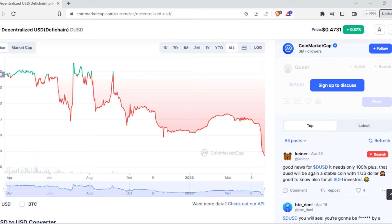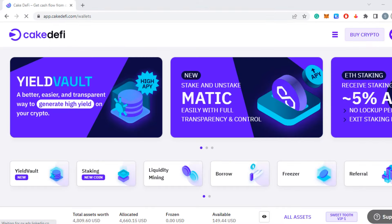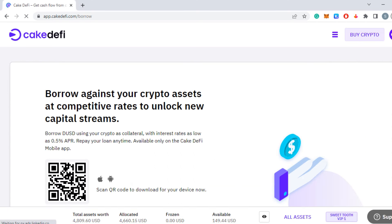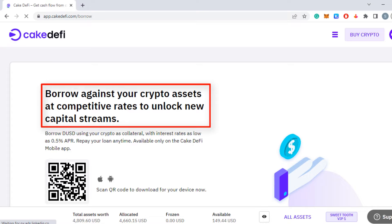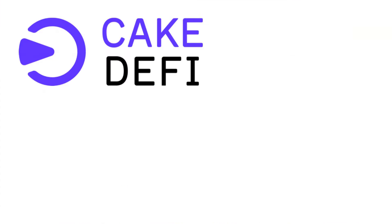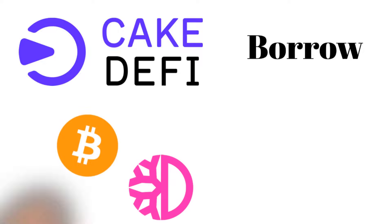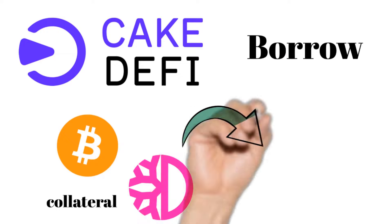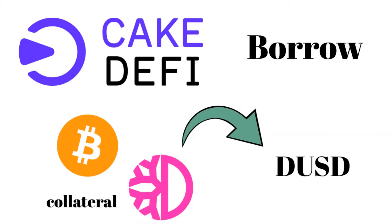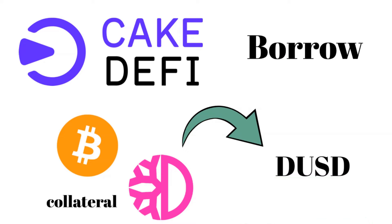You might ask: aren't algorithmic stable coins super risky? They can lose value quite a lot — and if you look at DUSD, it trades at around 50 cents. I agree, I wouldn't hold an algorithmic stable coin. But here's the thing: what we're going to do differently is borrow this stable coin. Therefore the price doesn't really matter, because if we have enough collateral we borrow the DUSD, and once we're done with liquidity mining we repay the DUSD and get our collateral back. It doesn't depend on the price — it could be 50 cents or 70 cents, it doesn't matter.